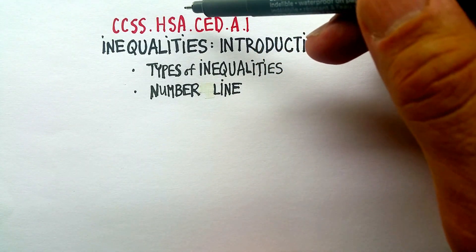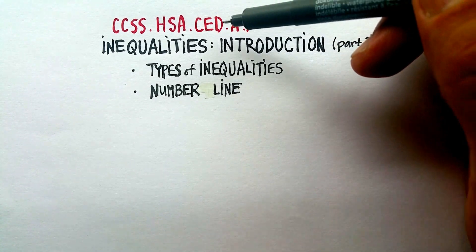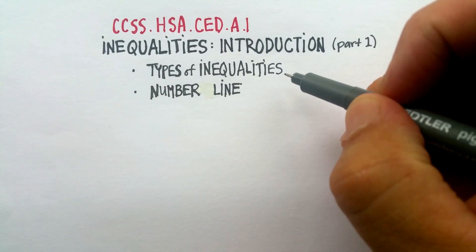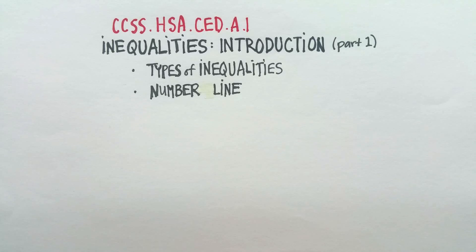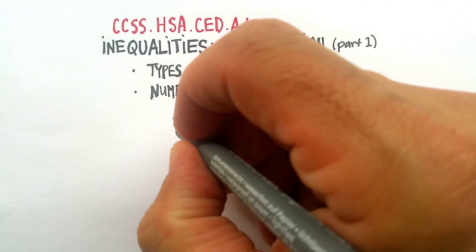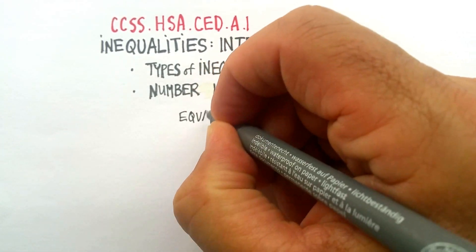This is covering the Common Core State Standards in high school algebra on creating equations, but actually also inequalities in standard A1. We go over two things with inequalities: the types of inequalities there are and what it looks like on a number line. Think of an inequality as being something similar to an equation.